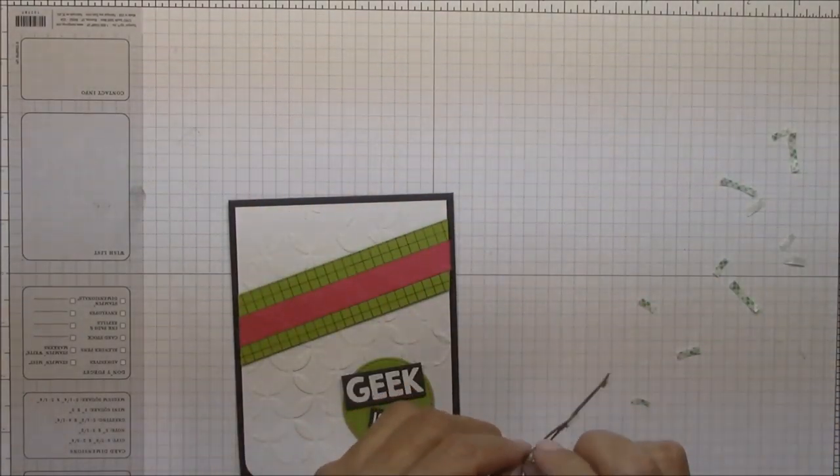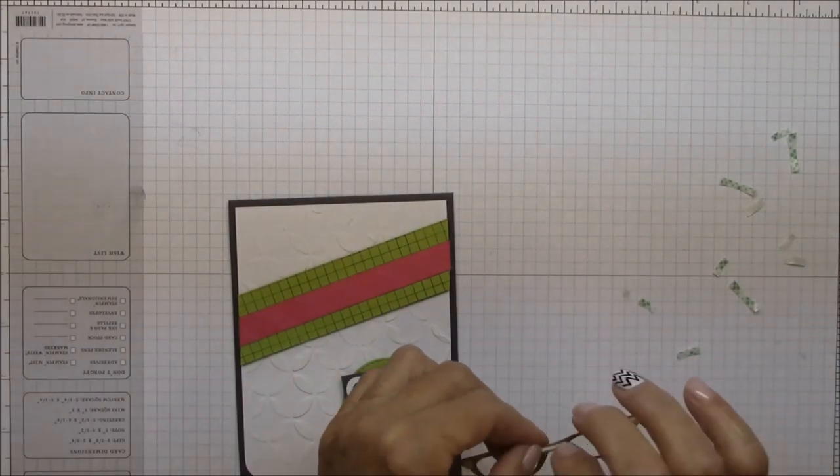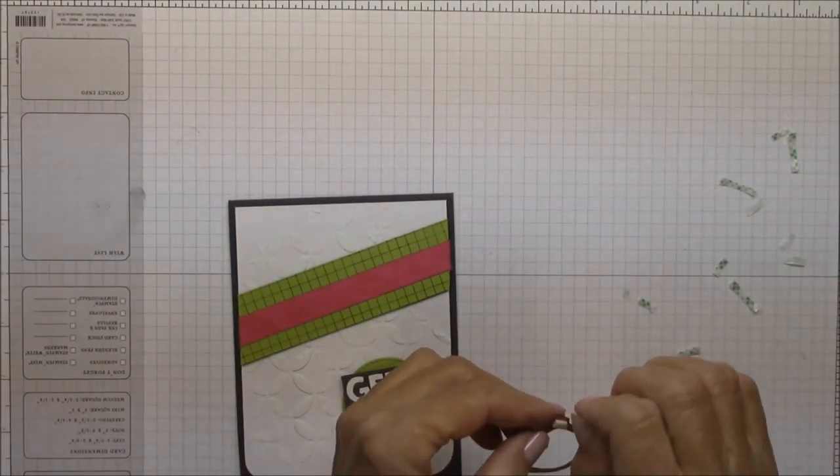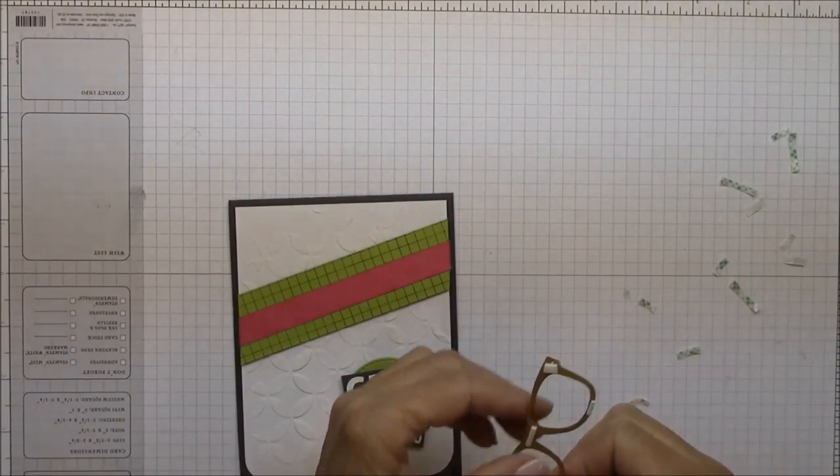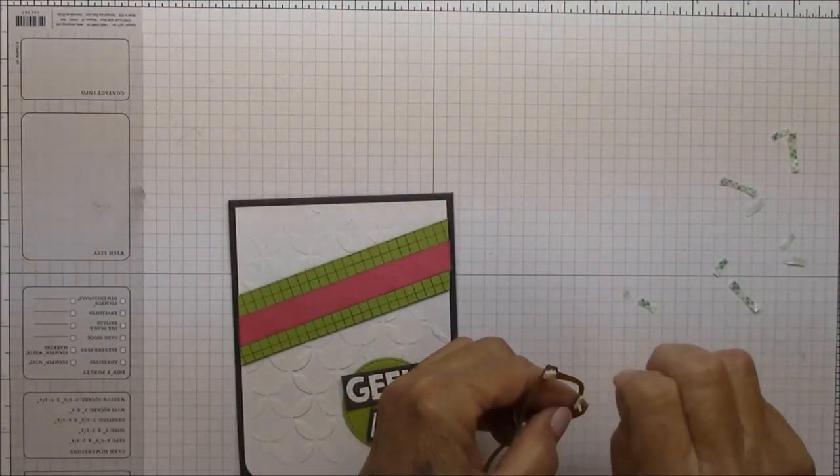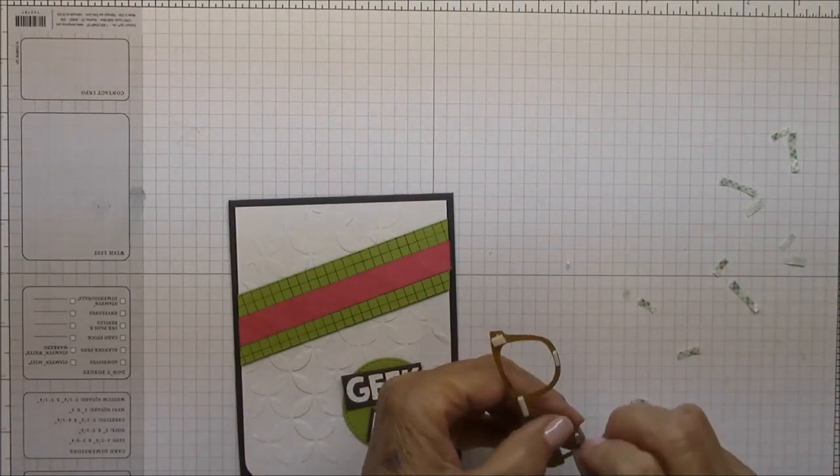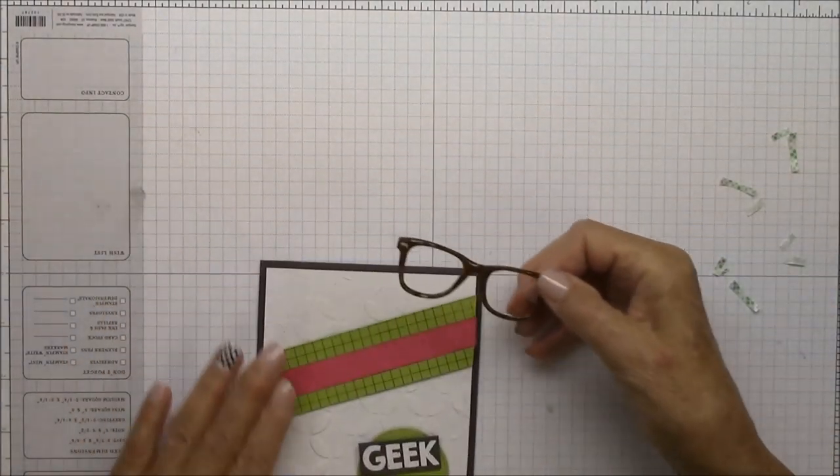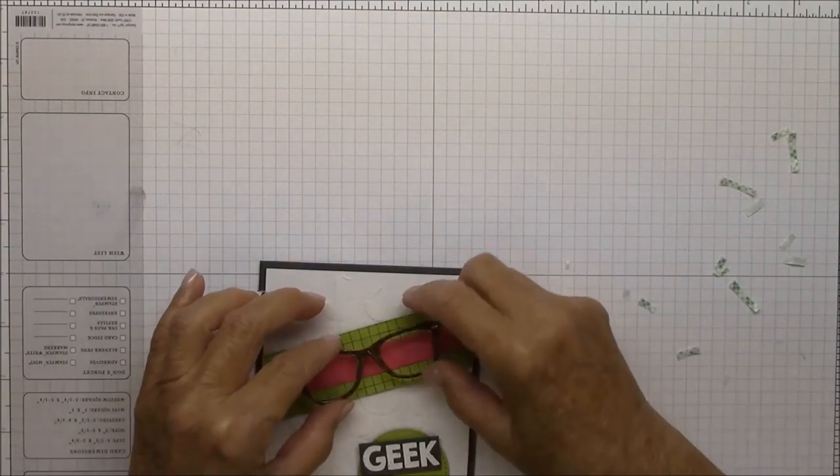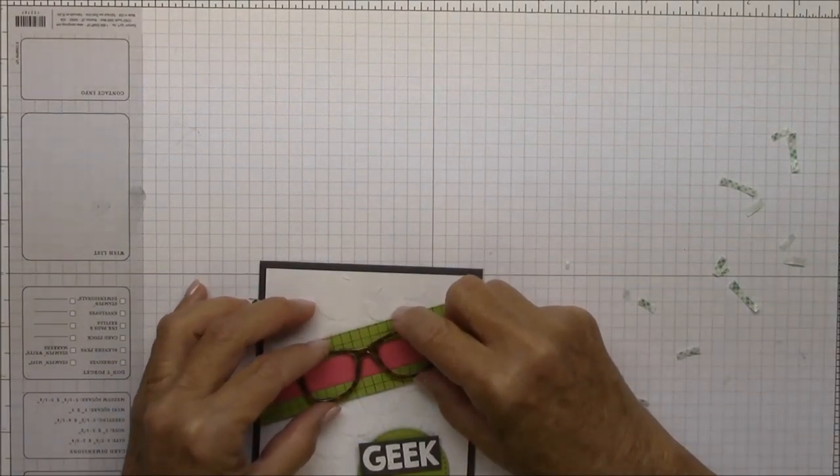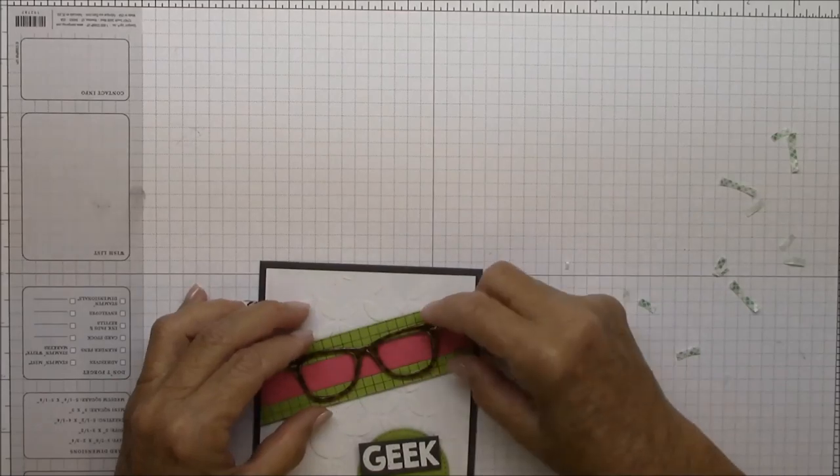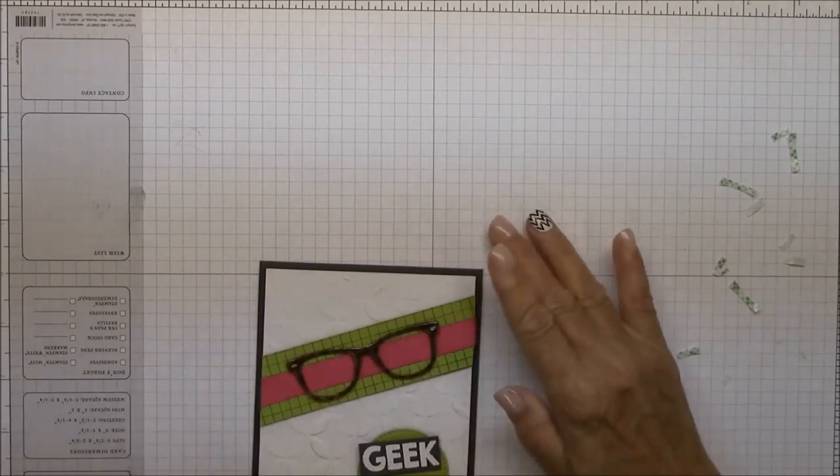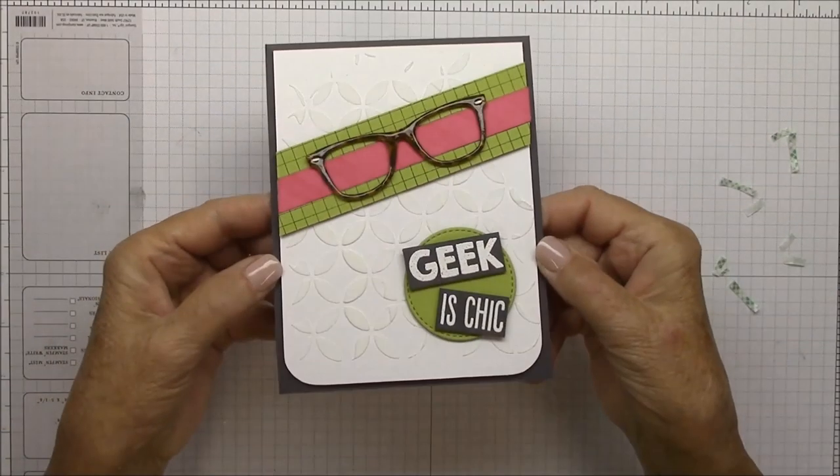I already have some tape on the back of my glasses. I'm going to remove the backing and adhere these to the colored cardstock strip. And there you have it.